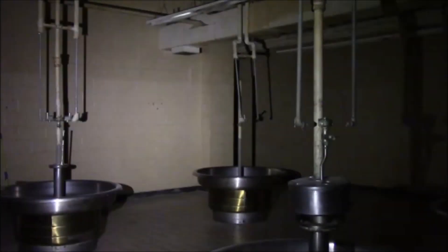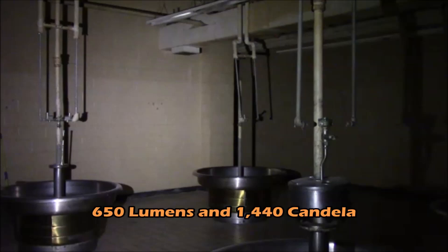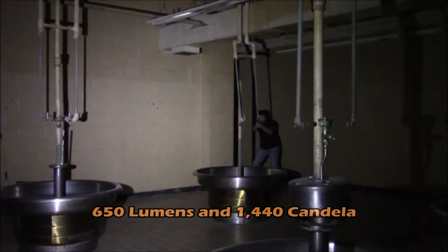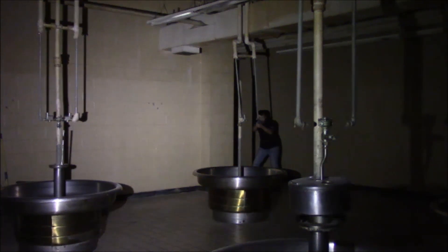Let's look at the exact same scenario with the Elzeta Bravo with the drop-in flood lens, 650 lumens, but 1,440 candela. Higher lumens, lower brightness. Now you see the same environment, no bright spot on the wall, but look at how much more visible the threat is. The difference can truly be life and death.